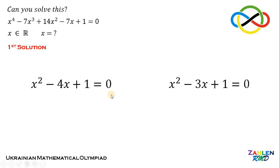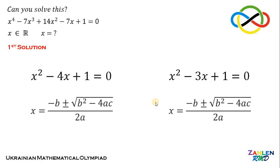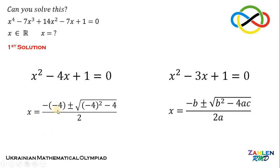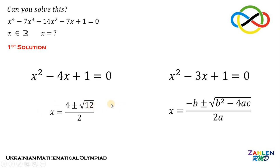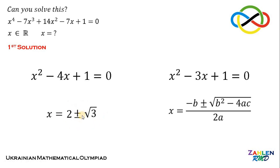Since both quadratic equations are not factorable, we use the quadratic formula: negative b plus or minus square root of b squared minus 4ac, all over 2a. For x squared minus 4x plus 1 equals 0, a equals 1, b equals negative 4, c equals 1. Substituting gives 4 plus or minus square root of 16 minus 4, all over 2. Since 12 equals 4 times 3, the square root of 12 is 2 times square root of 3, giving x equals 2 plus or minus square root of 3.